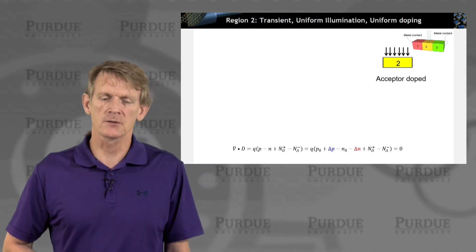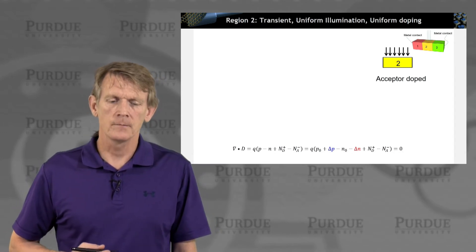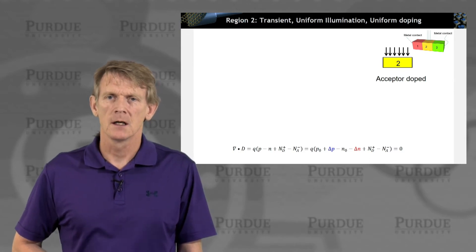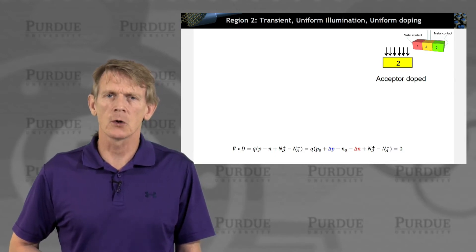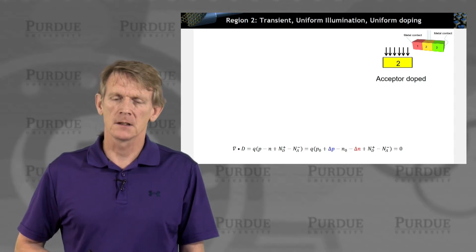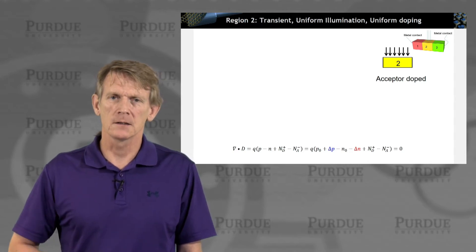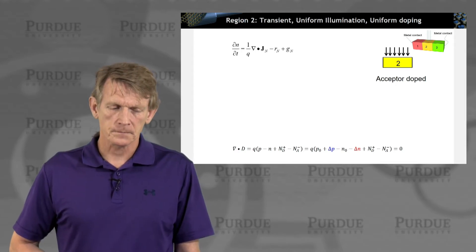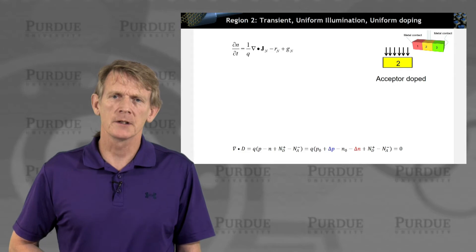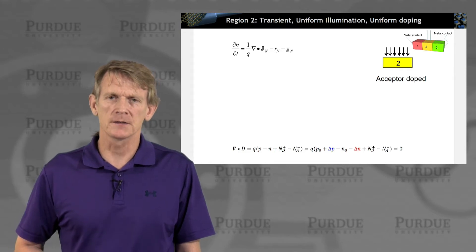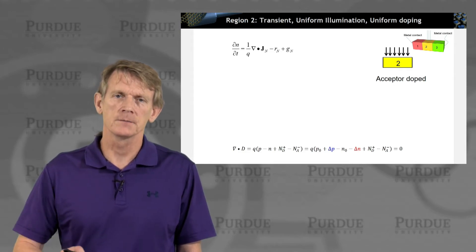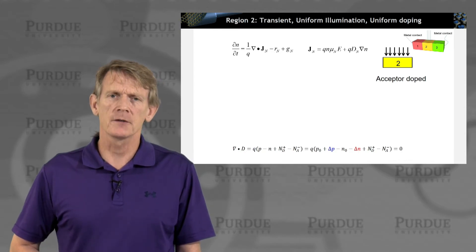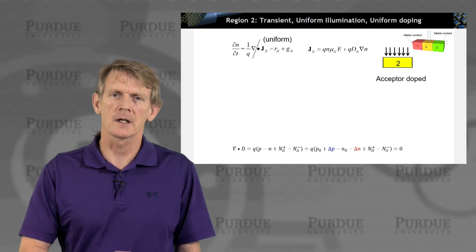All right. So let's consider the central region first. We have a uniform illumination that we assumed. Let's assume a uniform doping. And that we are looking at a transient effect where we shine light. So we start out with the continuity equation for the electrons, which in this case are the minority carriers. And we have the drift and diffusion expression here as well.